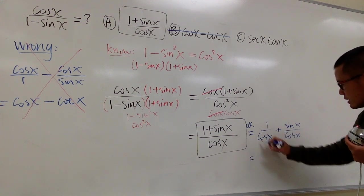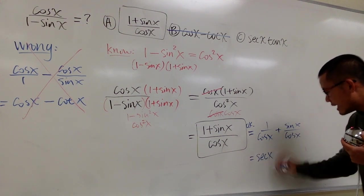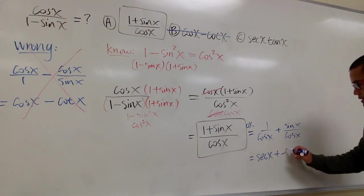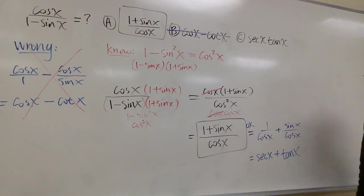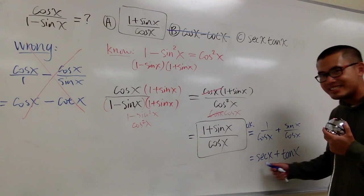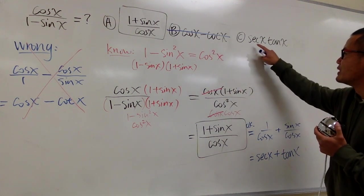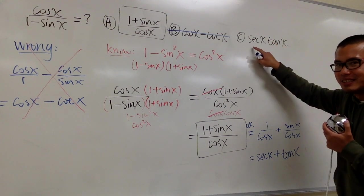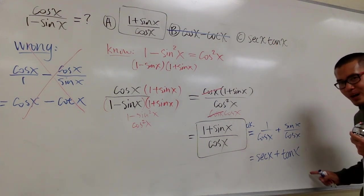If you continue, you see this is secant x, and we add it with sine x over cosine x. This is tangent x. But this is not one of the answer choices. Choice C right here, this is secant x times tangent x. This is so different than this one.